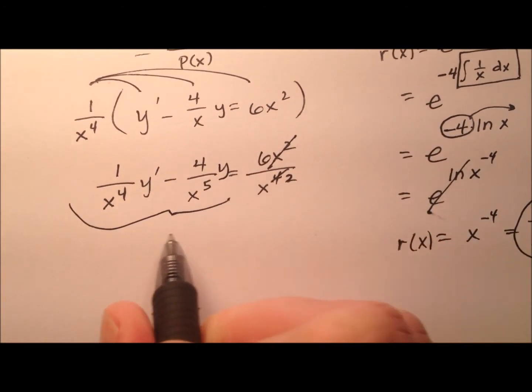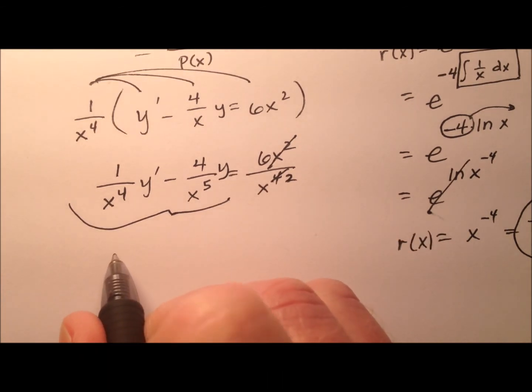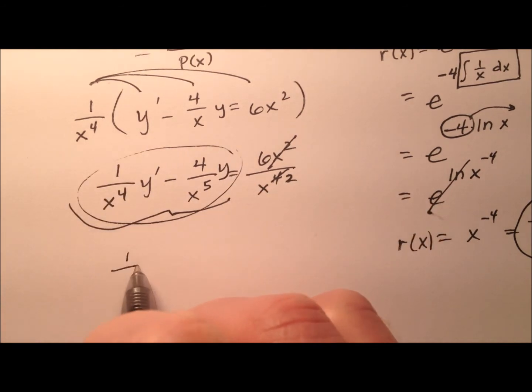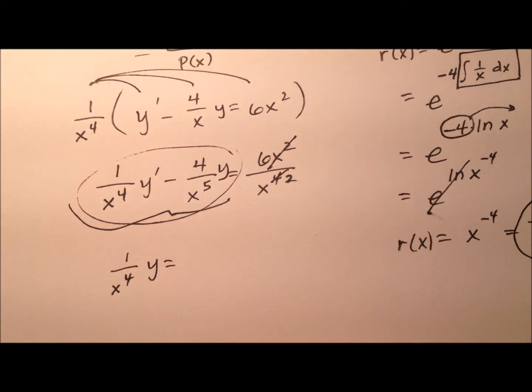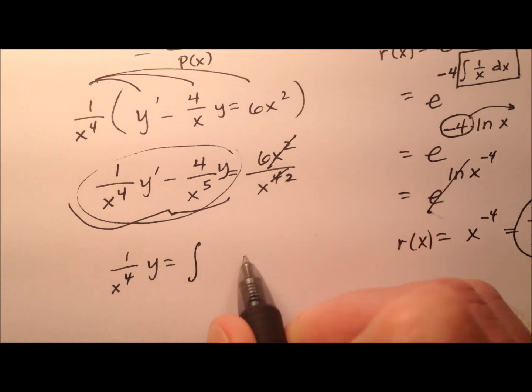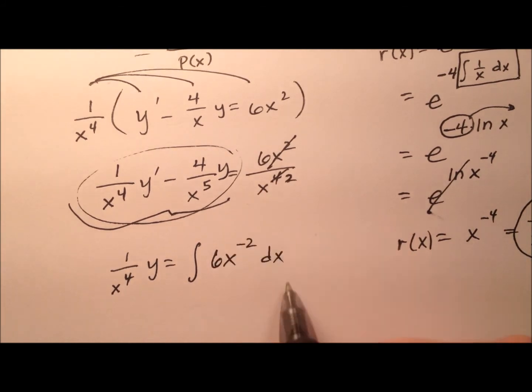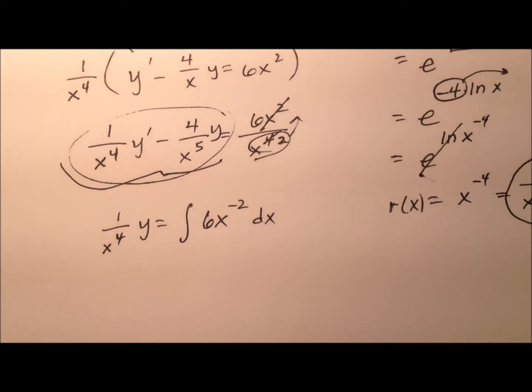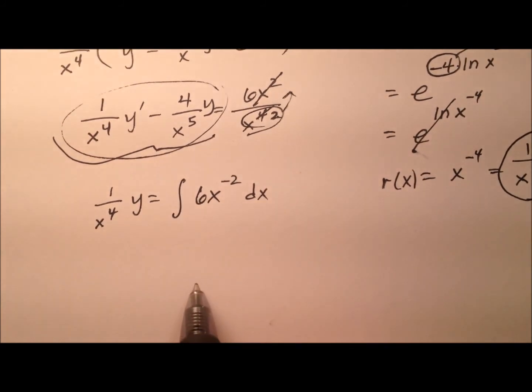So this left side ends up as the product rule for a derivative here. So whenever I take the integral of this left side, I'm going to end up with 1 over x to the 4th times y. And now when I integrate the right side, the simplification is actually 6x to the negative 2 with respect to x. Because this x squared, I went ahead and brought up to the numerator as a negative exponent. And that makes my integration process much easier.